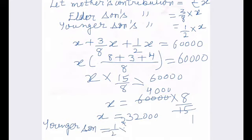So, half multiplied by 32,000. So, it will be 16,000 given by younger son.